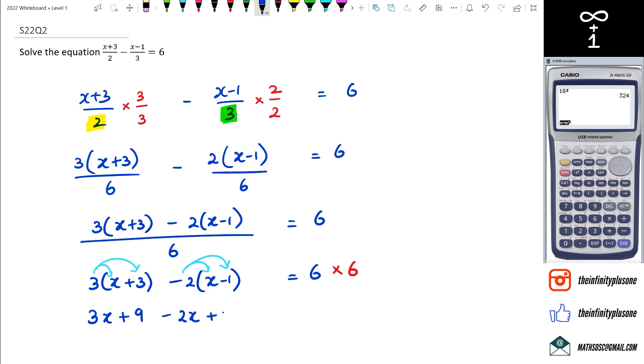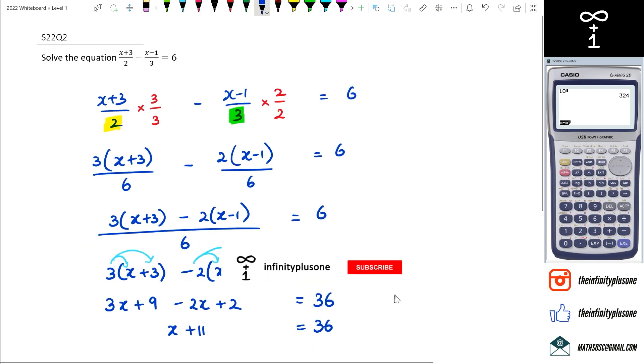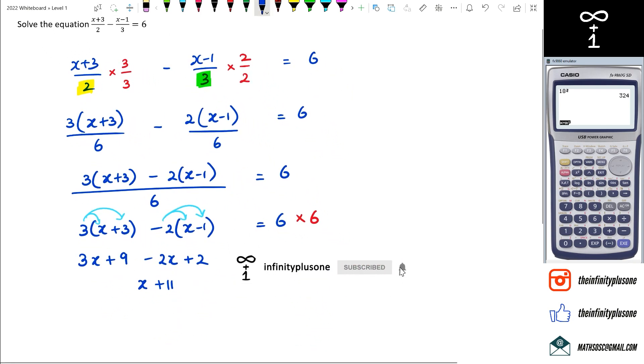Now I've got 3X minus 2X which equals to X, so I've got X plus 11 equals 36. And if I was to carry on with this, I'm going to get X is equal to 36 take away 11.